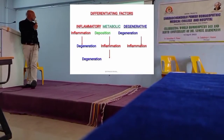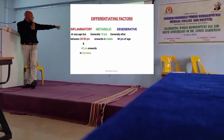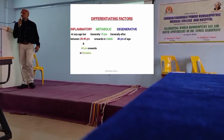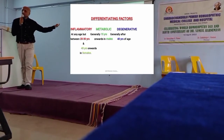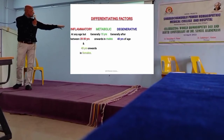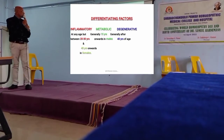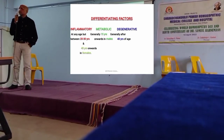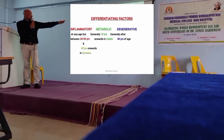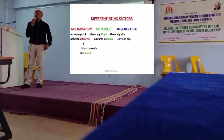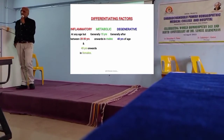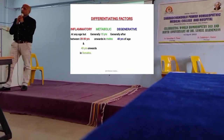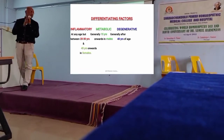Inflammatory variety can occur at any age, but between 20 to 30 years of age this is a common presentation. Metabolic variety is generally 15 years onwards in males and 40 years onwards in females. Degenerative variety generally occurs after 40 years of age. So this is when the disease can happen to be there.